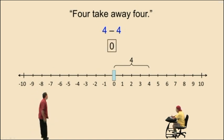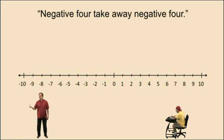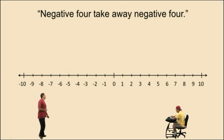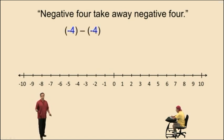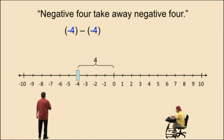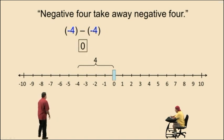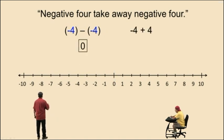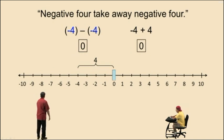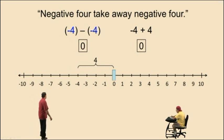Now let's take a look at this word statement: negative four take away negative four. If you have negative four and you take away the exact same quantity, negative four, you have to end up at zero, right? So let's do this on a number line. First, let's translate this word statement into a math statement. Here it is — negative four take away negative four, which is negative four subtract negative four. Well, let's start at negative four. Now if we're going to take away a negative four, we know we have to end up at zero. So to end up at zero, notice we have to move right four units, because negative four subtract negative four has to be zero. Notice here, negative four plus a positive four gives us the same result on the number line. We end up at zero.